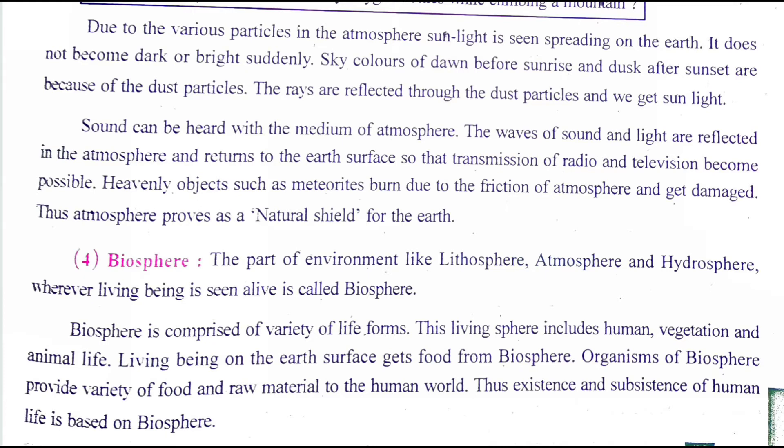Heavenly objects such as meteorites burn due to friction with the atmosphere and get damaged. Our atmosphere protects us from meteorites — when they enter, they burn up due to friction with the air and become very small, which leads to less harm to the Earth. The atmosphere is thus proved as a natural shield for the Earth.